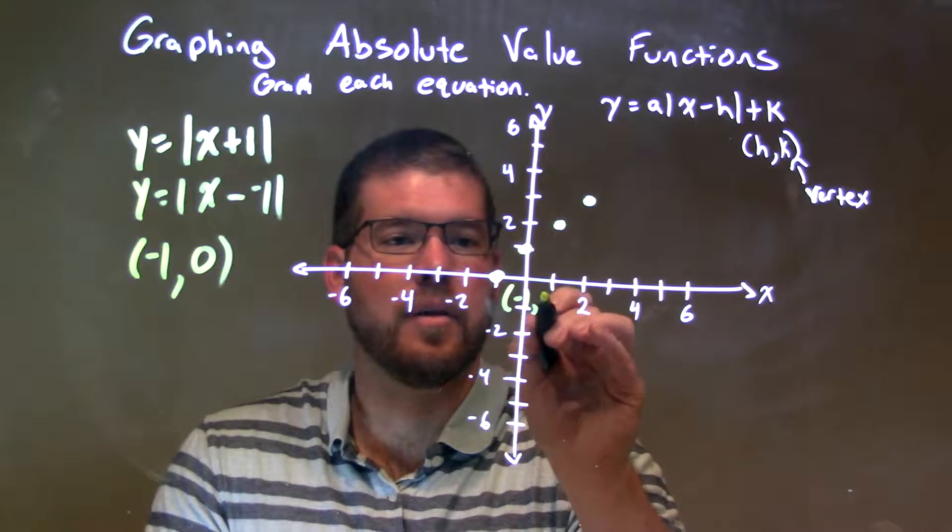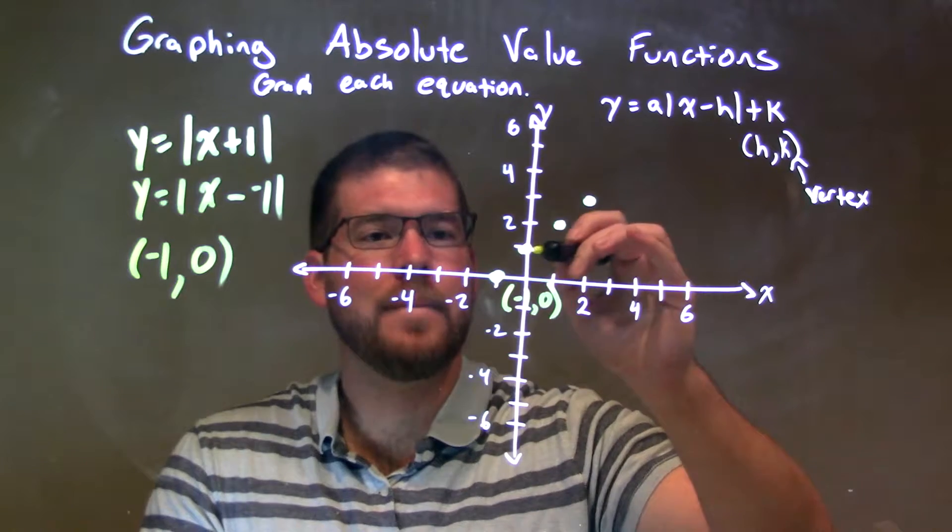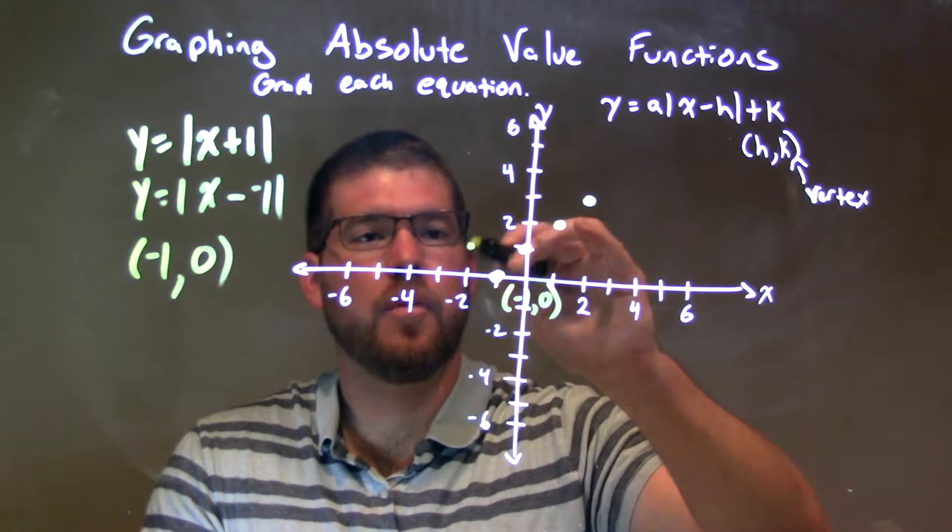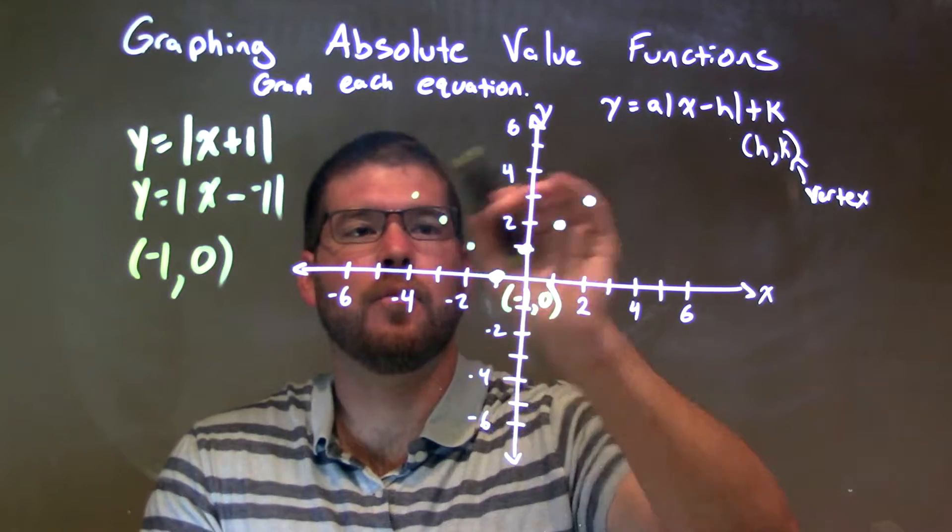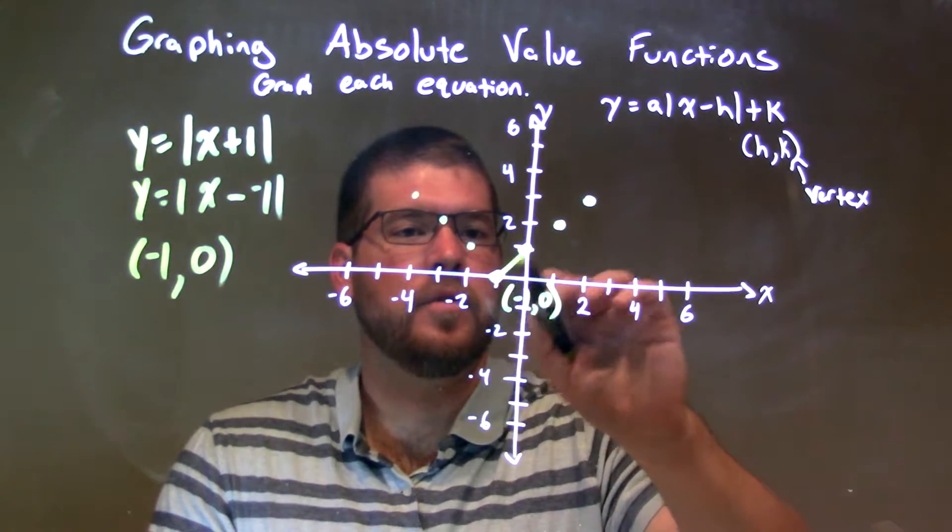The answer is negative 1 comma 0. Then we mirror that to the left: up 1 to the left 1, up 1 to the left 1, up 1 to the left 1. Now we just connect the dots to make our V.